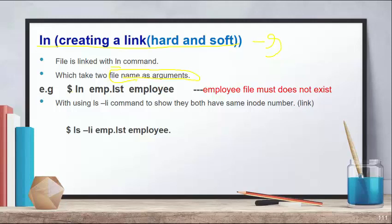For example, at the prompt: ln with the source file emp.lst — which already exists — and the destination file employee. The destination file should not already exist; you do not create it manually. The source file is what you already have, and you want to link it to the new file.